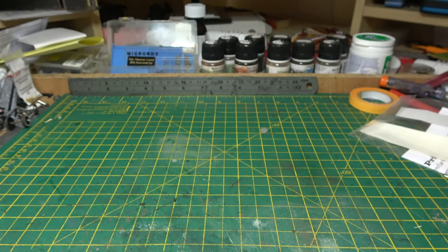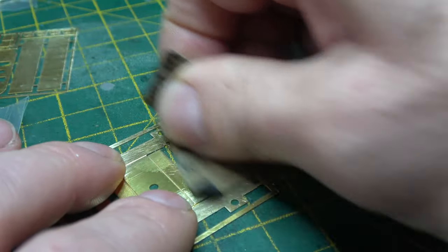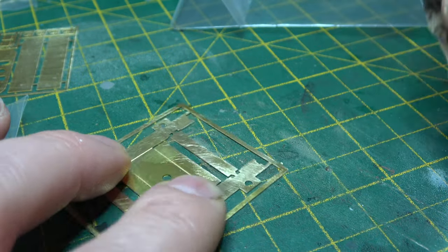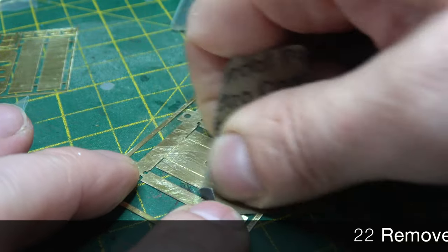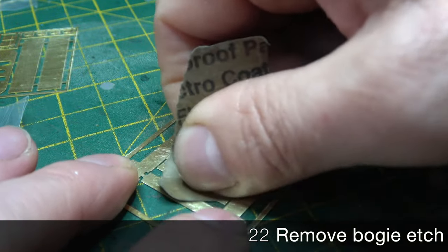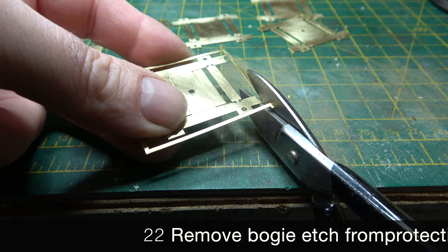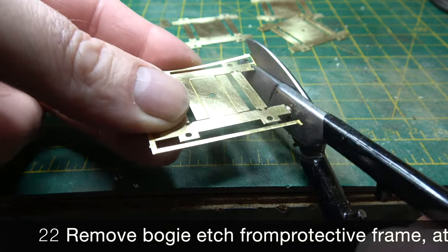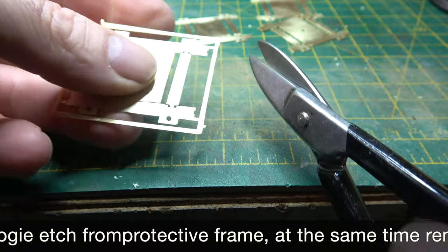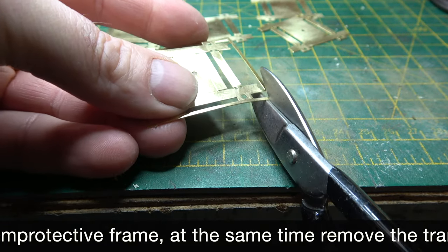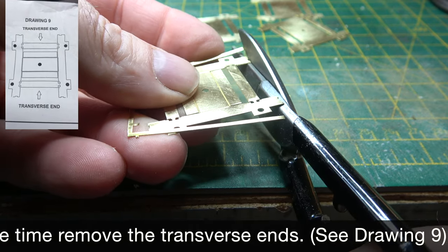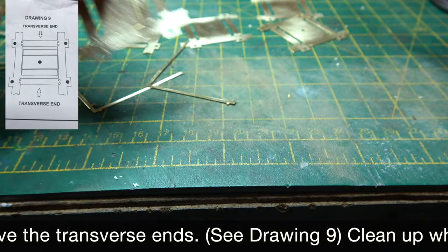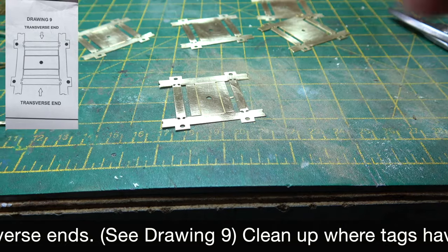So let's get going by ignoring the instruction sheet and going straight to the wheels and bogeys. Now the most important thing about this kit is cleanliness, so I spent the next 40 minutes, half an hour, just going over every bit of brass with some wet and dry, I think it's 800. I like to start with the wheels, I'm not sure why, something about building from the bottom up.